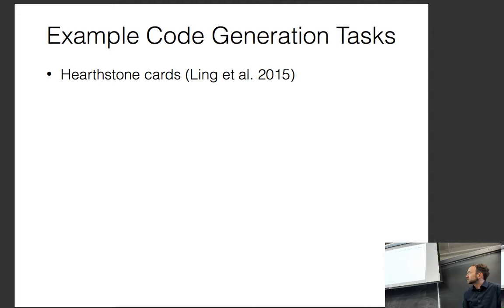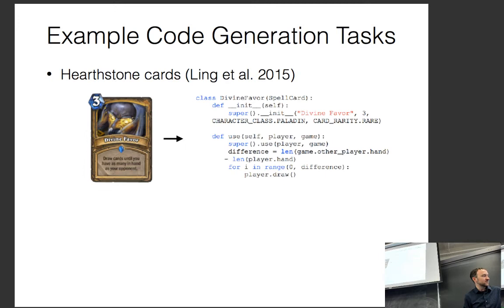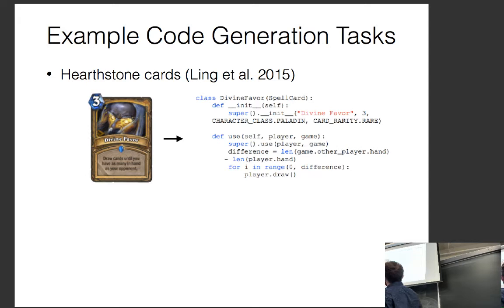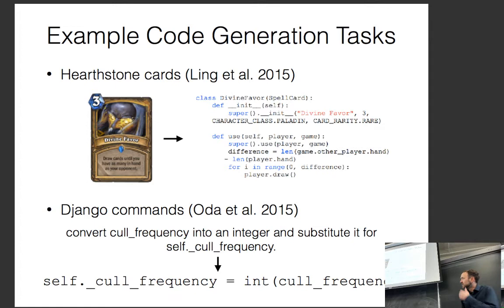For code generation, there are tasks like generating implementations of card games. A card description — 'this card costs three mana, its name is Divine Favor, and the action is draw cards until you have as many in hand as your opponent' — gets implemented as a Python class. There are also Django commands, where you take lines from the web framework Django and convert them, like 'convert a call frequency into an integer and substitute it for self.callfrequency.'